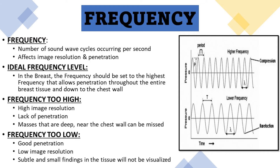When frequency is set too high, you have high image resolution but a lack of penetration, and this can mean that you miss masses that are deep in the breast near the chest wall. When your frequency is set too low, you have good penetration throughout the breast tissue but very low image resolution, meaning that subtle and small findings in the breast tissue will not be visualized.